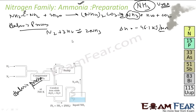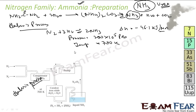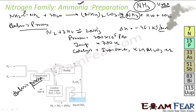It happens at very high pressure — that is 200 × 10⁵ Pascal — and temperature is almost 700 Kelvin. It also needs a catalyst, for example Iron Oxide, K2O, Al2O3, etc. High pressure actually favors the formation of ammonia as per Le Chatelier's principle.